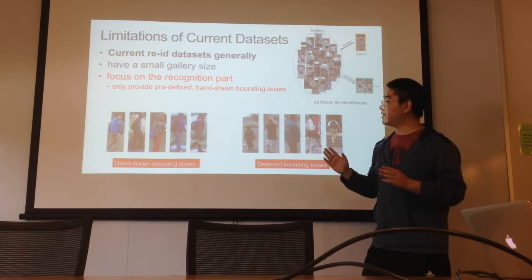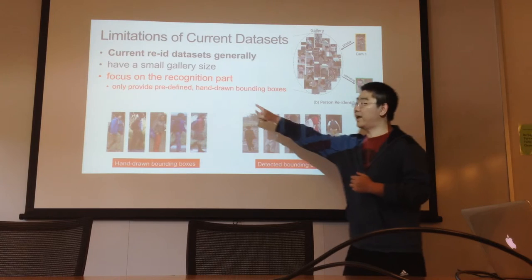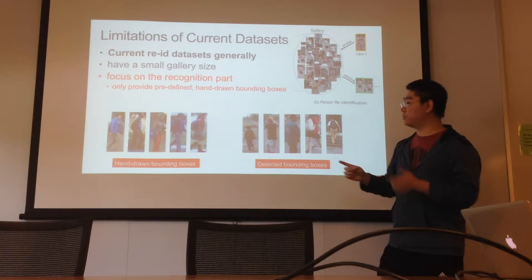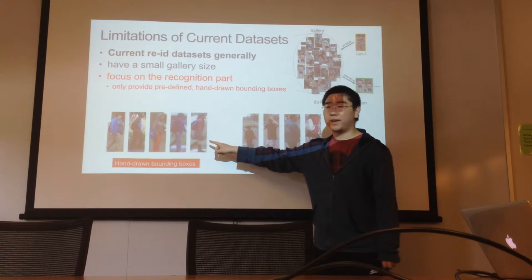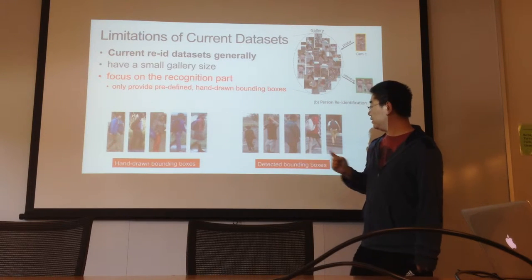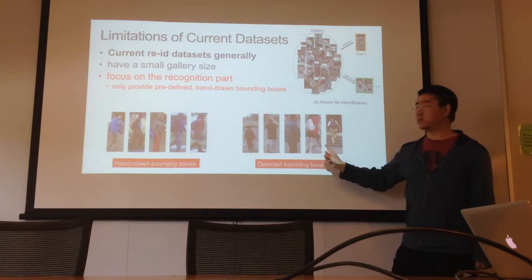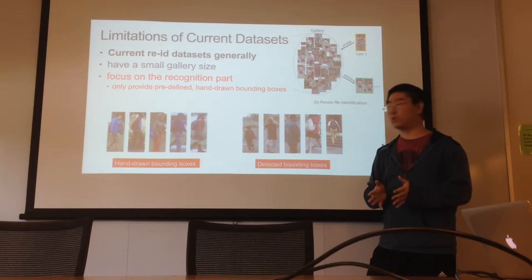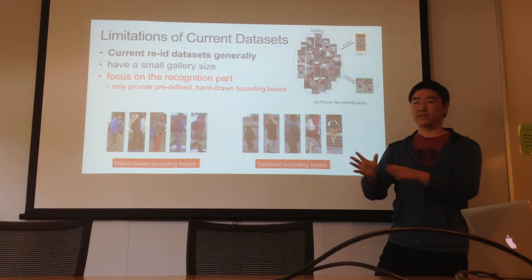These datasets only provide pre-defined bounding boxes, and moreover, these bounding boxes are hand-drawn — not produced by a detector. These are some examples from current datasets. They are drawn by hand, not by detectors. Here are some detected bounding boxes, and we can see there is some misalignment in the persons. But for hand-drawn bounding boxes, the persons are aligned very well. So current datasets are quite ideal, not reflecting real settings.